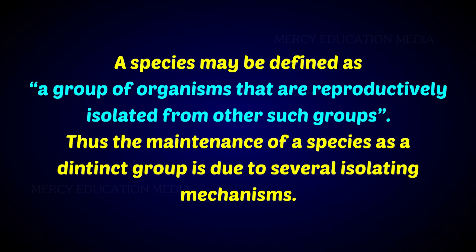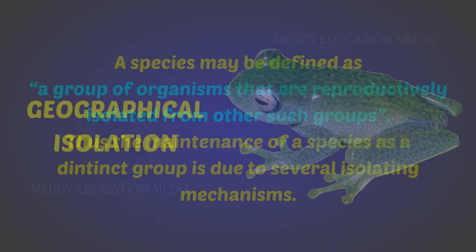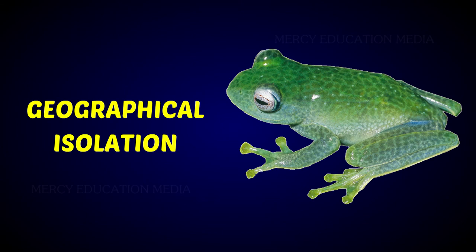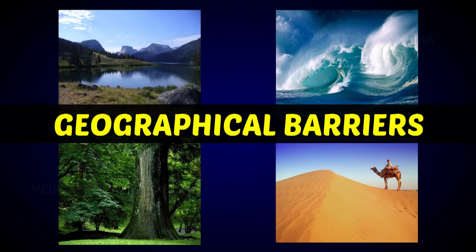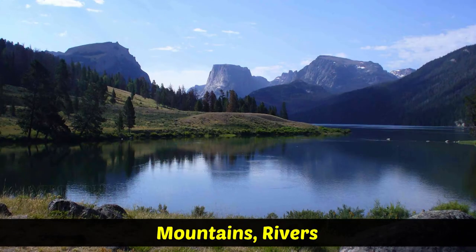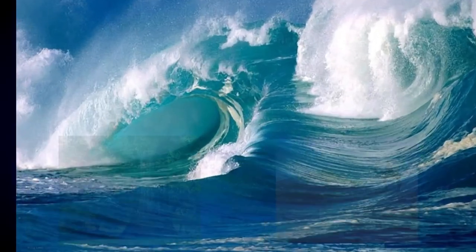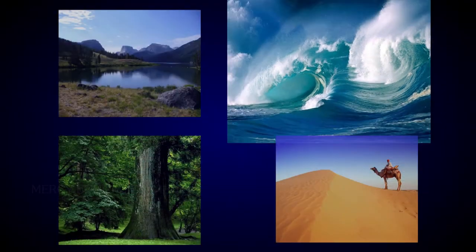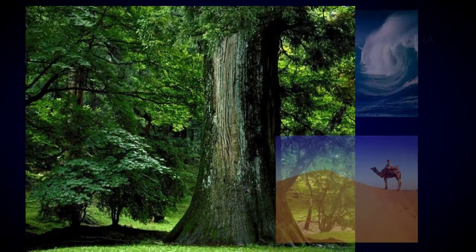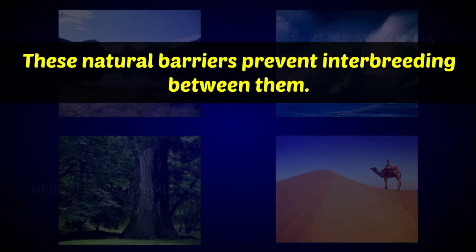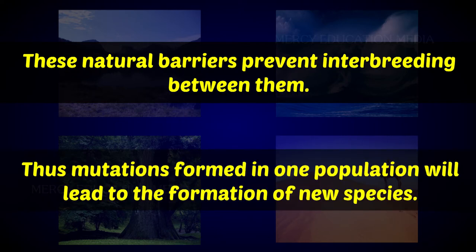The maintenance of a species as a distinct group is due to several isolating mechanisms. Geographical isolation is a common type of isolation. The isolation between populations is caused due to geographical barriers such as mountains, rivers, oceans, forests, or deserts. These natural barriers prevent interbreeding between them. Thus, mutations formed in one population will lead to the formation of new species.